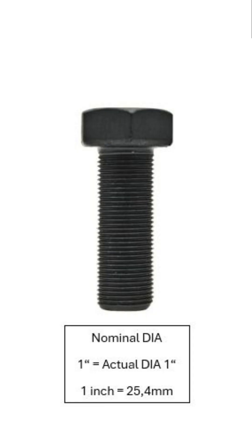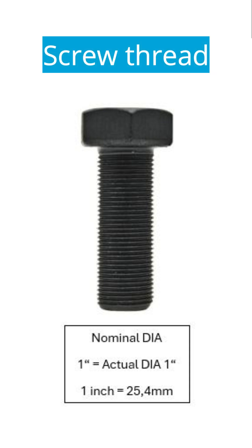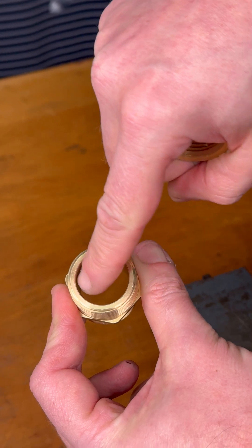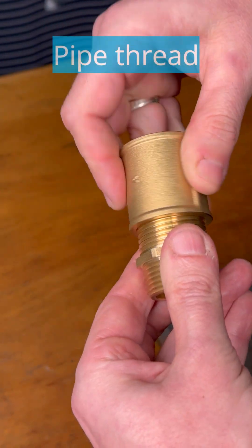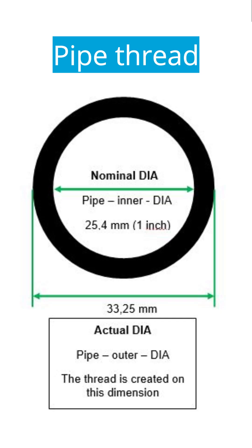For screw threads, the nominal thread size is the same as the actual thread size. A screw thread with a nominal size of one inch therefore always has a diameter of one inch, or 25.4 millimeters. For pipe threads, however, the inside diameter of the pipe is decisive for specifying the nominal size. A pipe thread of nominal size one inch is therefore on the outside of a pipe that has an internal width of one inch. As the wall thickness is added to this internal width, the actual diameter of the pipe thread is larger than its nominal diameter.